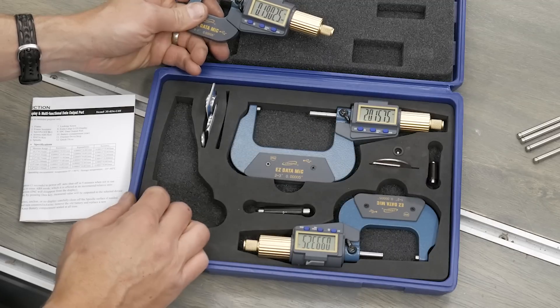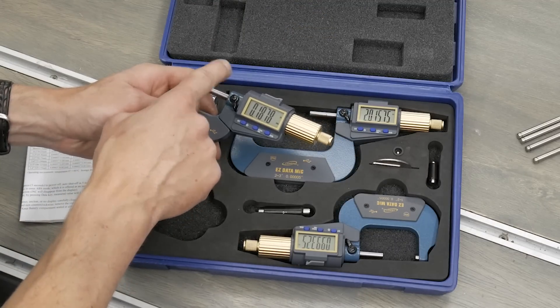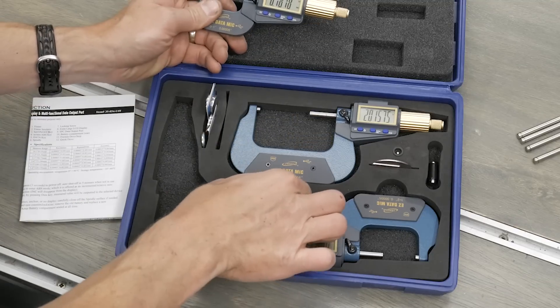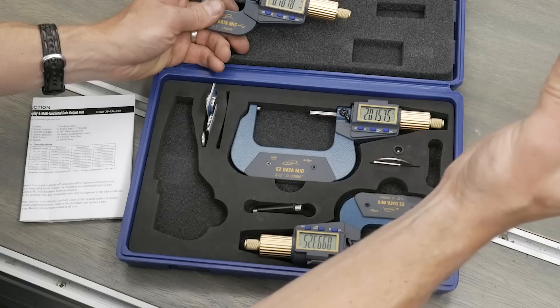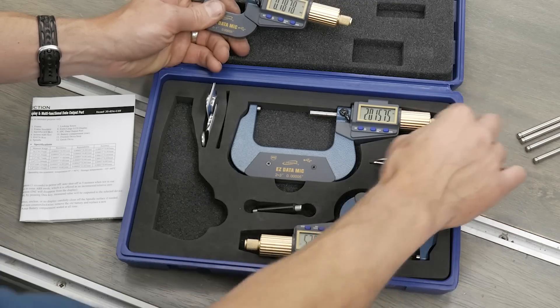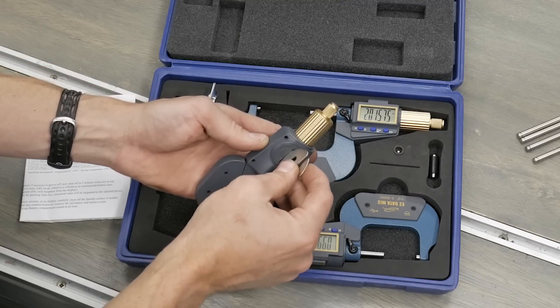It has the tools that you need to calibrate. None required for the 0-1 because you do that with the anvil closed. It's got the 2-inch for the 2-3 and it's got the 1-inch for the 1-2. It comes with a special tool that helps to open and close the battery door on the back.